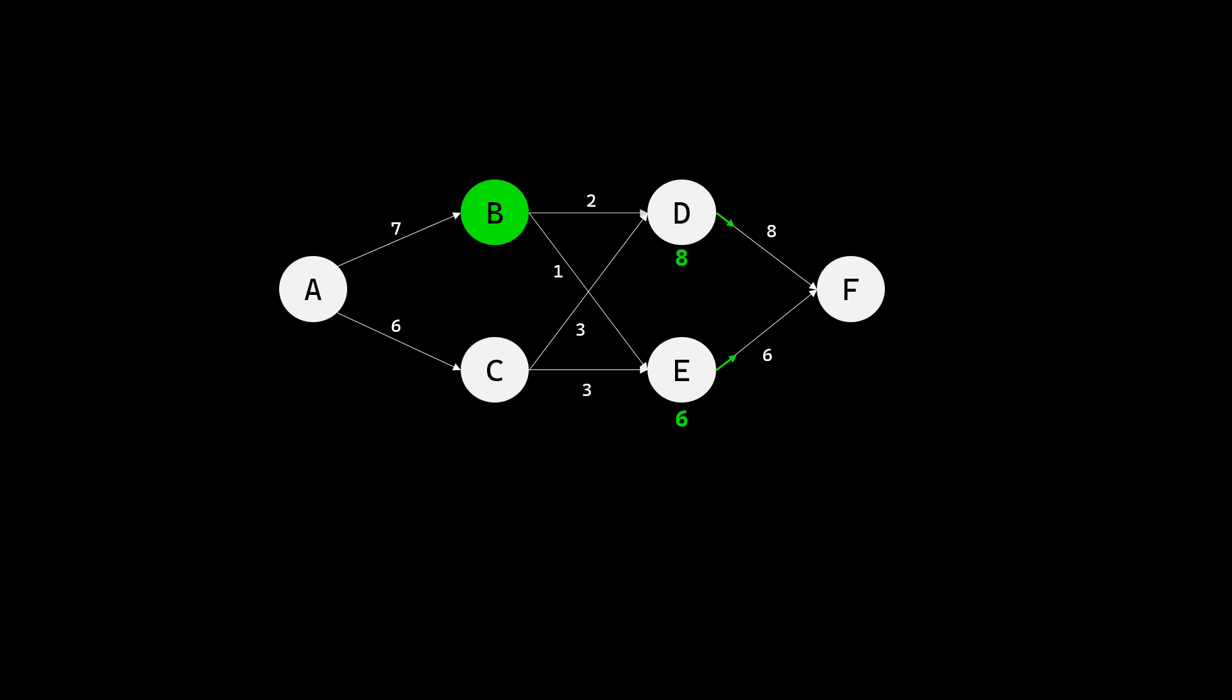Moving on to the prior stage we focus on state B. Now there are two ways to go from state B, one towards D, another towards E. The minimum cost of going towards D is two plus eight which is ten. The minimum cost of going towards E is one plus six which is seven. So the optimum way forward from state B is towards E and the least cost from B to the destination state F is seven. The optimum direction is again marked with the green arrow.